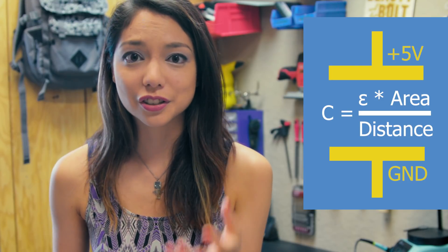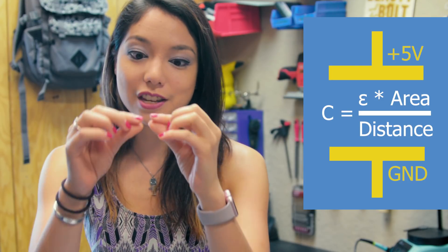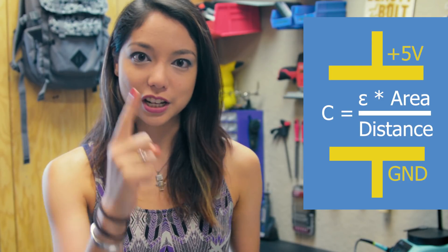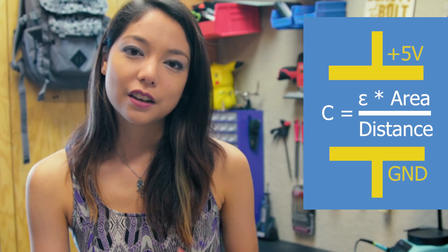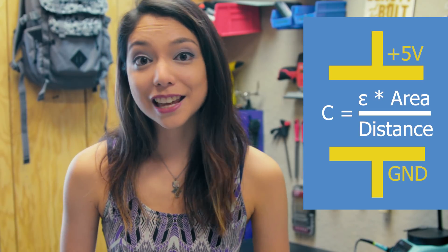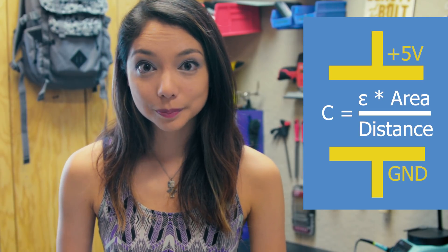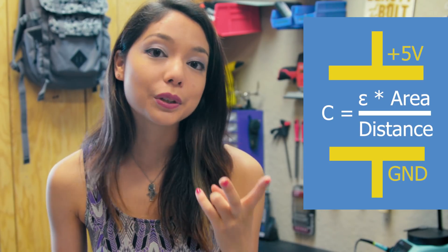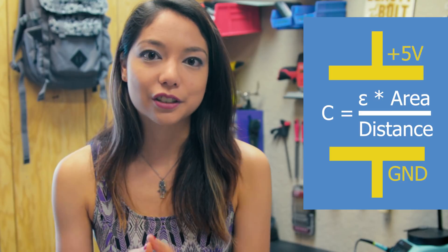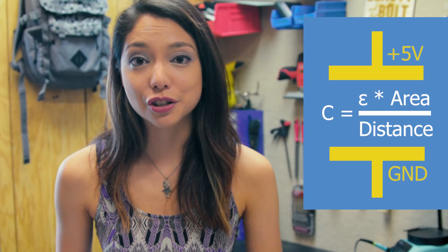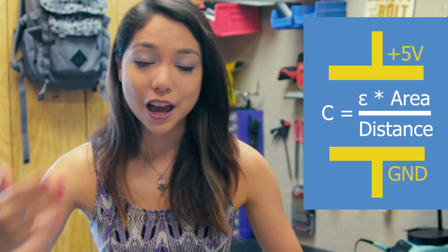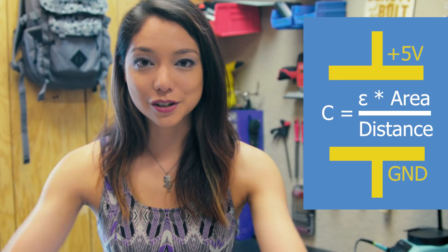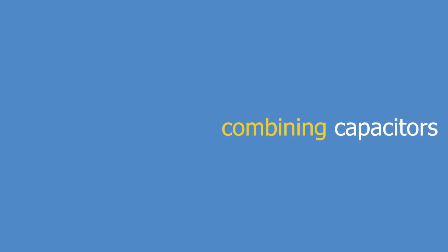You can also change the size of the plates. In a lot of commercial capacitors, the plates are actually in a coil, so there are lots of different options. All capacitors have two leads, or two connectors, that can be plugged into your circuit. One lead goes to one plate, the other lead goes to the other plate, and that's how it integrates into your circuit.